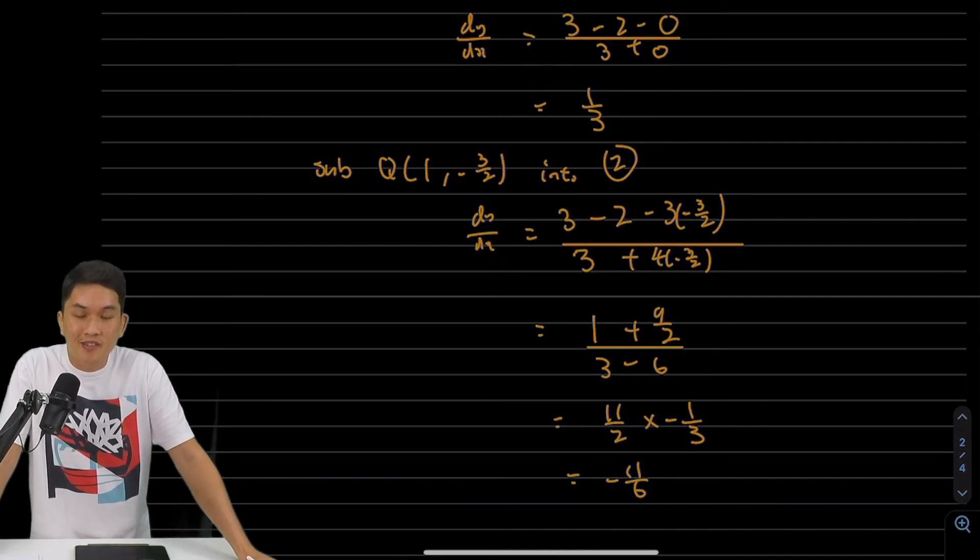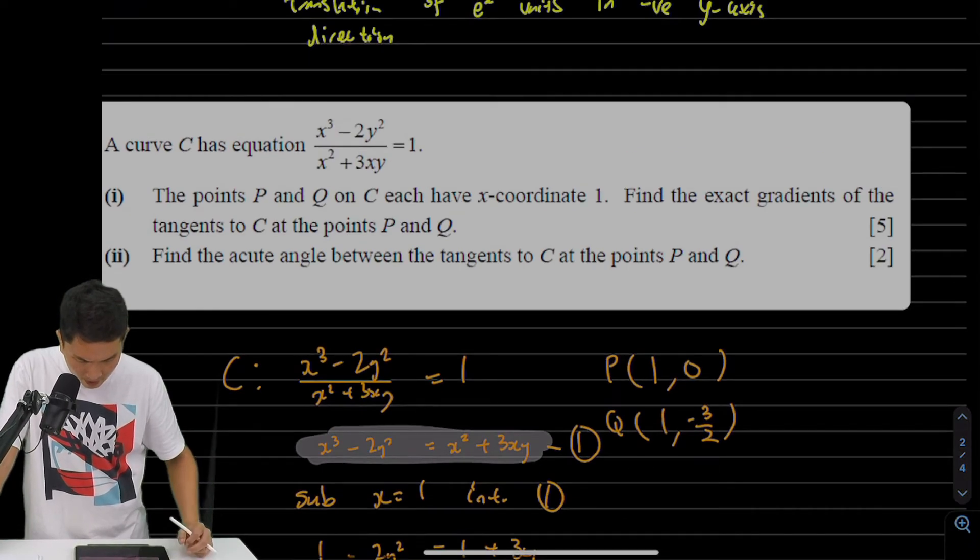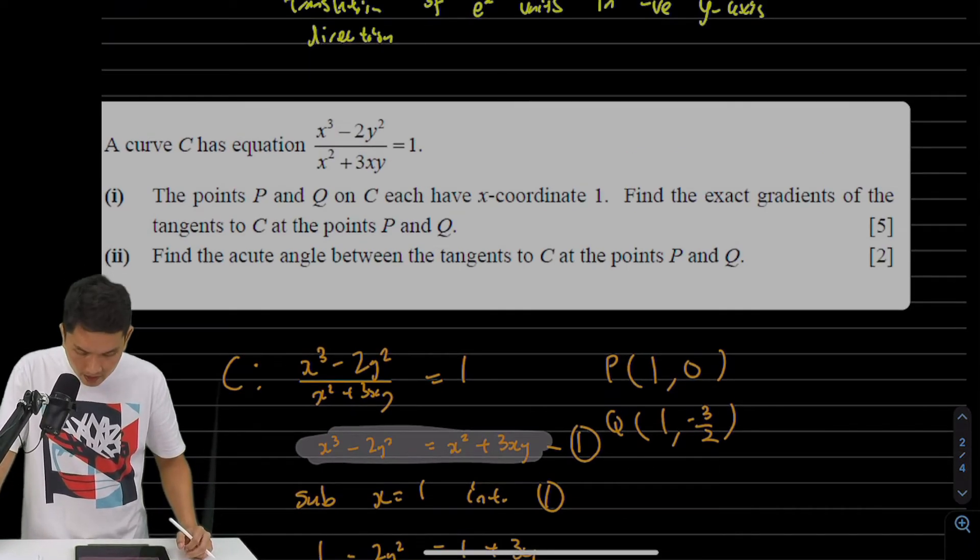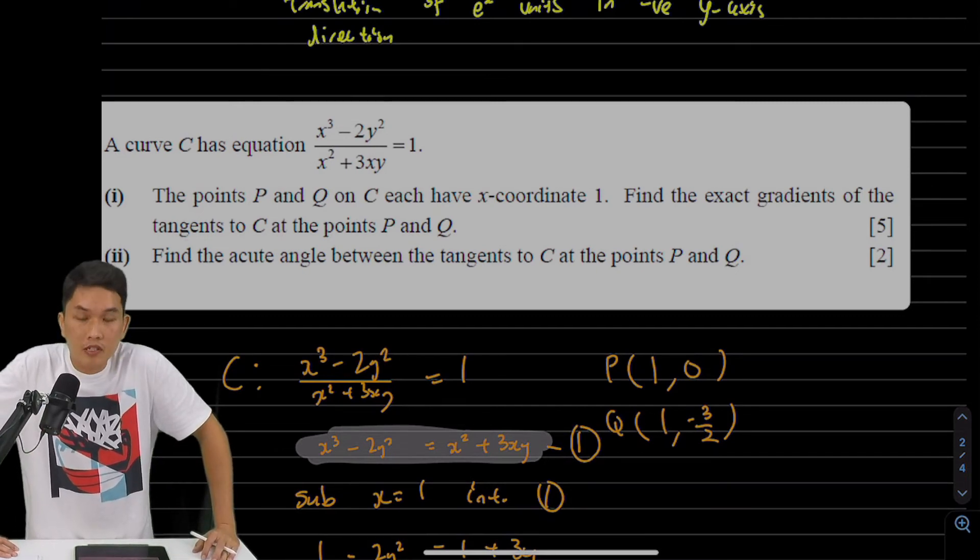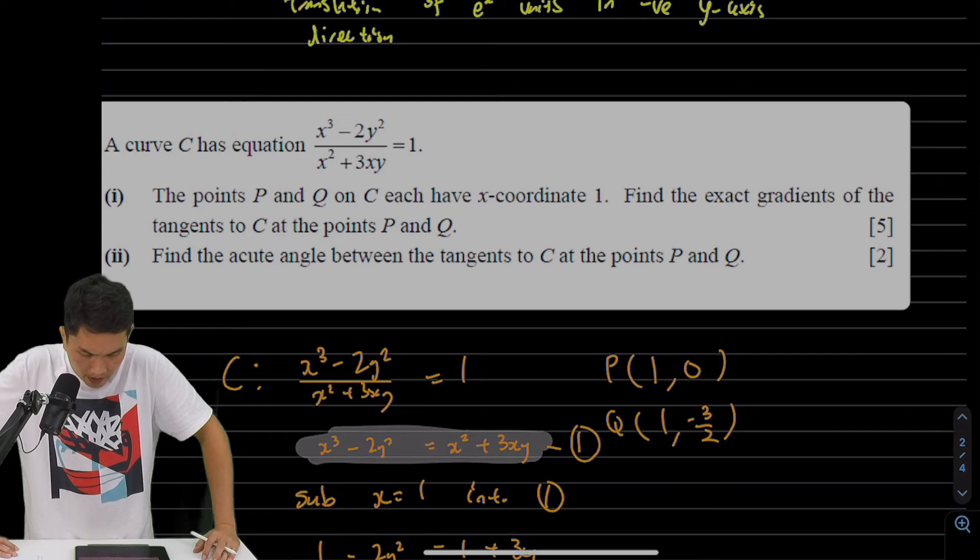That's question 2, part 1. Next, let's do question 2 part 2: Find the acute angle between the tangents to C at the points P and Q.